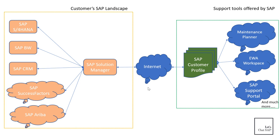On the SAP side, this information is stored in respective customer profiles. Each customer has a separate file in the customer profile, identified using individual customer numbers. For example, when you log into a tool like the Early Watch Alert Workspace using your S-User ID, that ID is linked to the customer number of your organization. Based on that customer number, it automatically pulls the correct information about your SAP landscape from the customer profile. This is one of the core functionalities of SAP Solution Manager and how it is used by most customers.